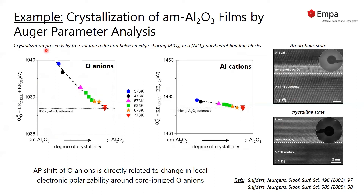a decrease in the oxygen anions due to the densification of the structure. The aluminum cations do not show a very pronounced change in their local chemical state, which we can understand by realizing that aluminum cations have a very strong short-range ordering in the oxide structure, which doesn't change much during the crystallization process,